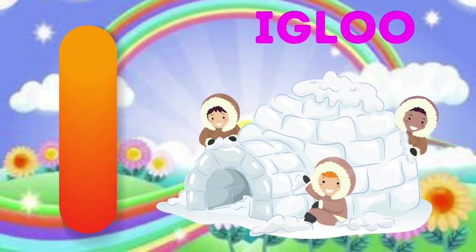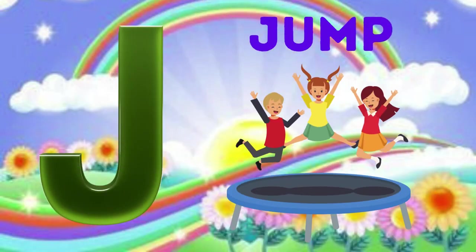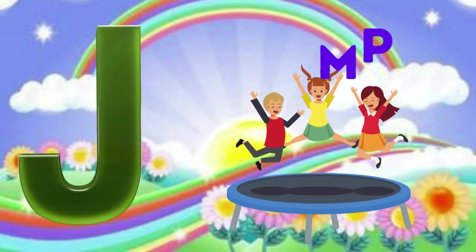I is for igloo, i-i-igloo. J is for jump, j-j-jump.